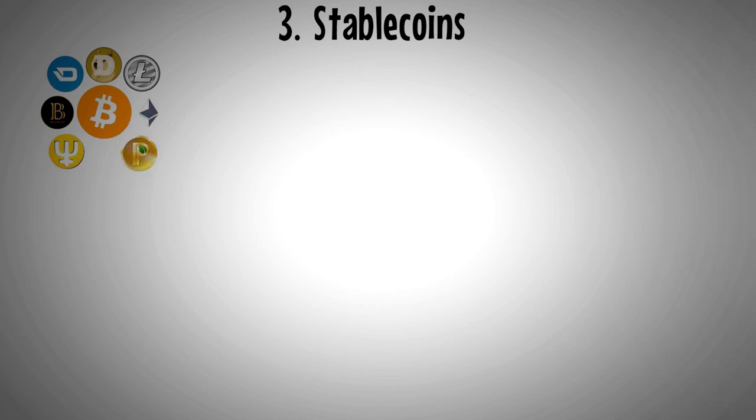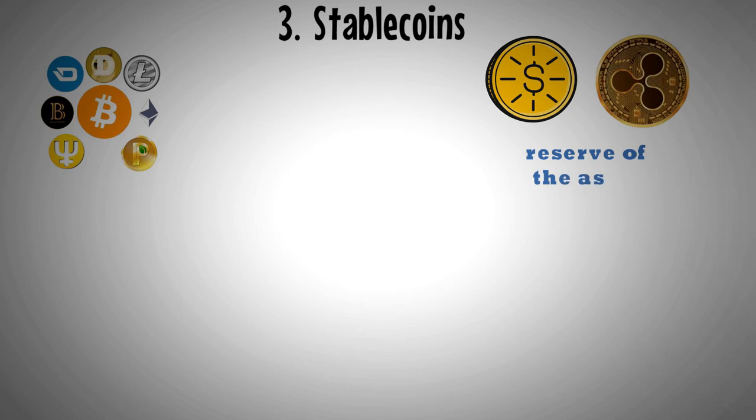Number three: Stablecoins. Stablecoins are a type of cryptocurrency that is built to offer more stability than other crypto coins. Some are actually backed by a reserve of the asset they represent. Others use algorithms or other methods to keep their values from fluctuating too much.